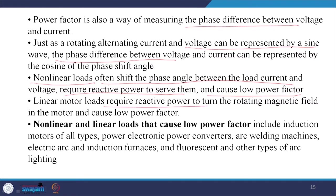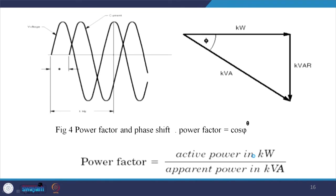Linear motor loads also require reactive power to turn the rotating magnetic field in the motor, causing low power factor. Non-linear and linear loads that can cause low power factor include induction motors of all types, electronic power converters, arc welding machines, electric arc furnaces, induction furnaces, and fluorescent and other types of arc lighting. The voltage and current have a phase difference of phi, and the cosine of that angle is the power factor. Power factor is essentially the ratio of active power in watts to apparent power in kVA.